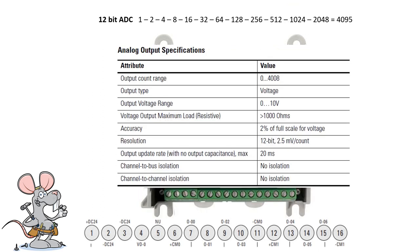For the analog output, the attribute output count range shows 0 to 4008 — I couldn't find an explanation for that in the manual. I'm thinking it's 4095, just like the inputs, since it's 12-bit at 2.5 millivolts per count. That means as you run the analog value up and down, it goes in 2.5 millivolt jumps: 0, then 2.5, then 5 millivolts, 7.5 — nothing in between, because this is converting from digital to analog. There's only the one analog output, at pin 4.